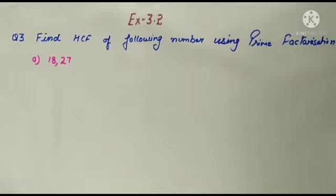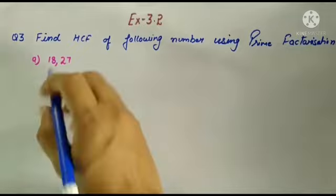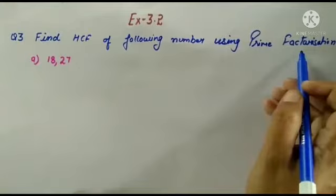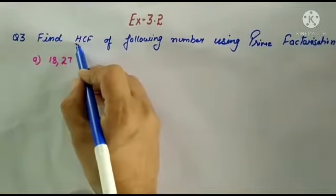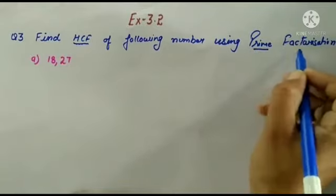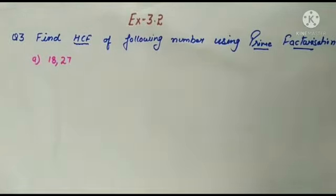Students, in the last video you have done exercise 3.2, questions number 1 and 2. Today we are going to do question number 3 of exercise 3.2. Let me see what is the question. Find HCF of the following numbers using prime factorization. You have to find HCF using which method? Prime factorization method.